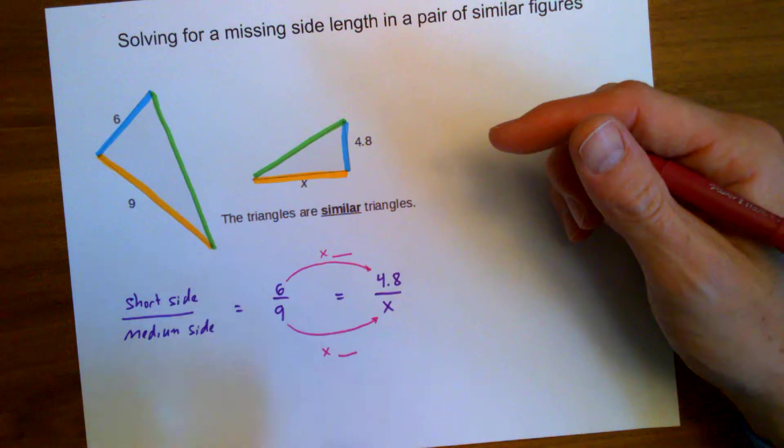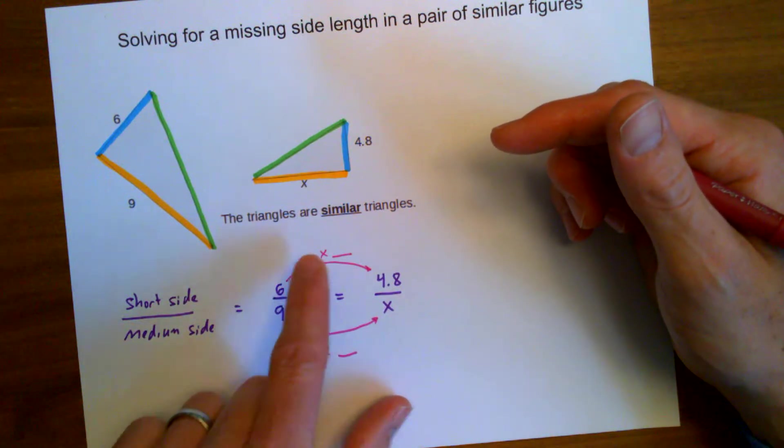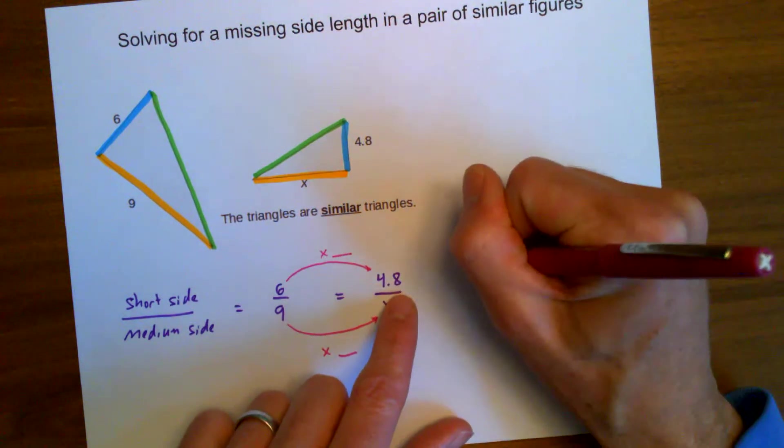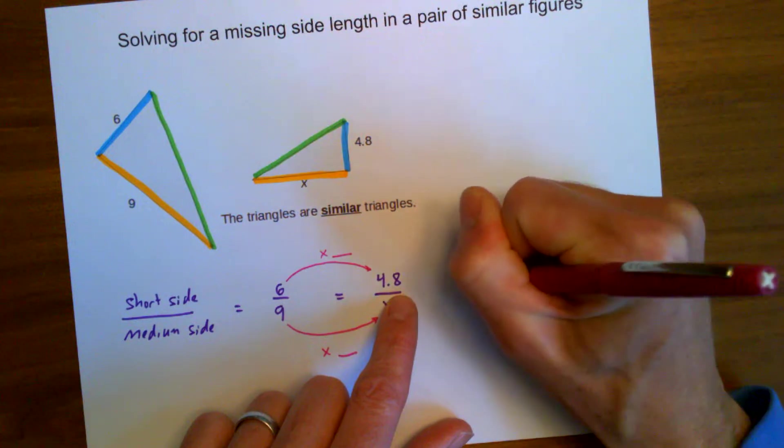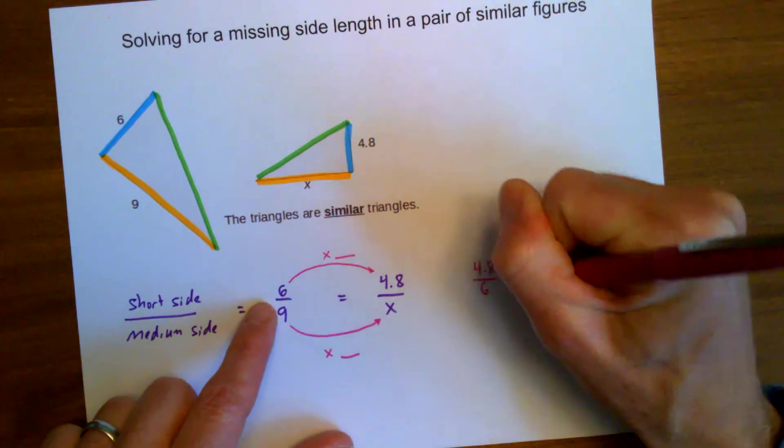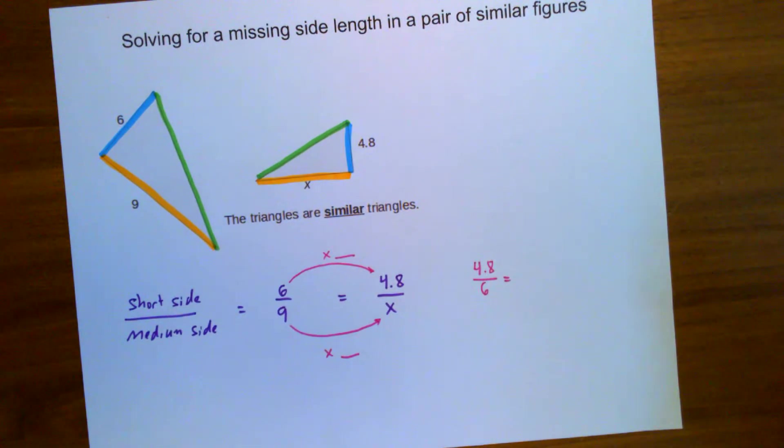Let's work backward. The opposite of multiplying is dividing. Instead of 6 times something is 4.8, I can do 4.8 divided by 6 equals that something.